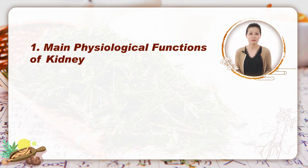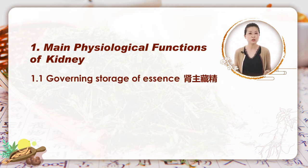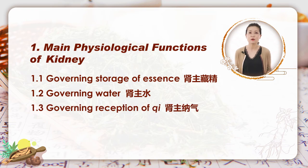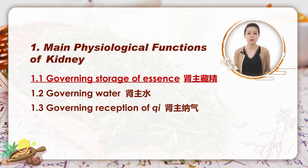The main physiological functions of kidney include three aspects: governing the storage of essence — shen zhu cang jing; governing water — shen zhu shui; and governing reception of qi — shen zhu na qi. Today we focus on the first one, kidney governing the storage of essence. The second and third will be covered in the next section.